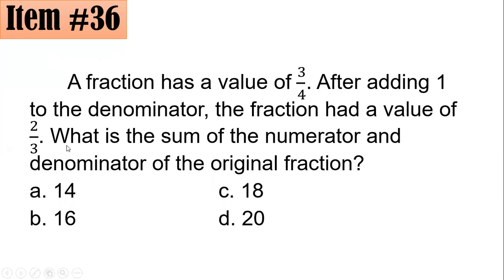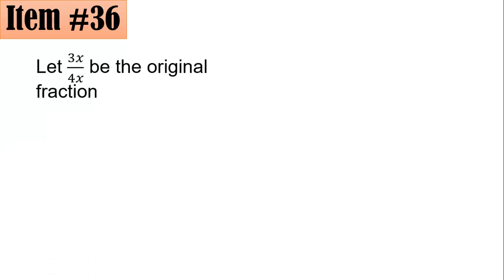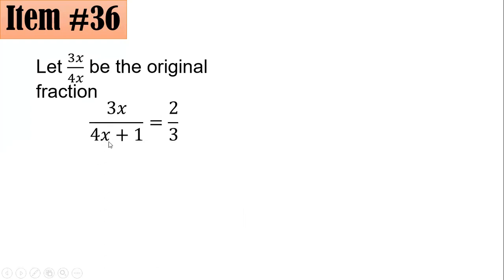The fraction had a value of 2 thirds. The answer choices are 14, 16, 18, or 20. Let 3x over 4x be the original fraction, where x is the GCF of the numerator and denominator — dividing gives 3 fourths. Adding 1 to the denominator gives 3x over 4x plus 1, which equals 2 thirds.